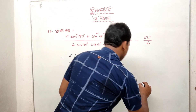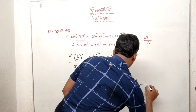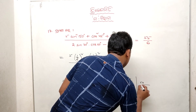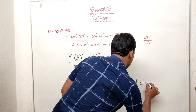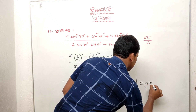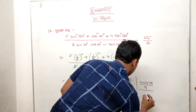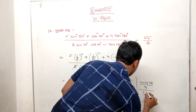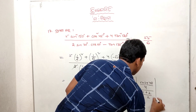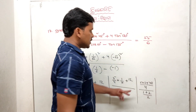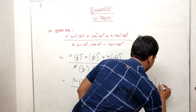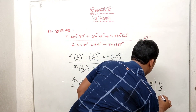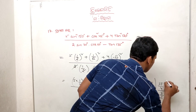So we have 5 by 4 plus 1 by 2 plus 12, whole divided by 2 into 1 by 4, minus minus 1. The numerator gives 5 by 4 plus 2 by 4 plus 48 by 4. Denominator is 2 times 1 by 4 plus 1, which equals 3 by 2. Final answer is 5 by 4 into 2 by 3.